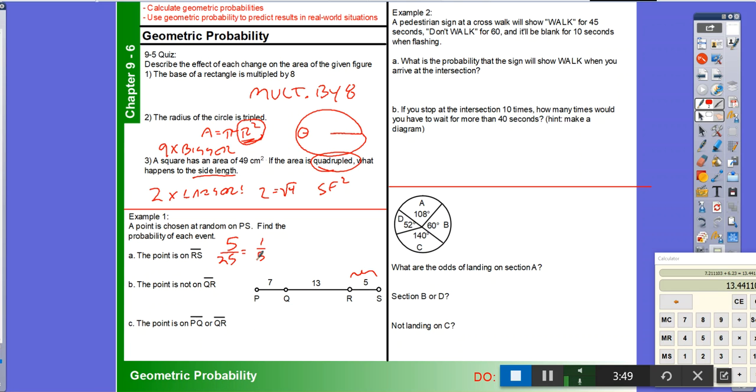What are the odds that the point is not on QR? If it's not on QR, that means it's either on RS or it's on PQ. And this is a distance of 5 plus 7, which is 12. The whole line segment hasn't changed. It's still 25 units long. So 12 out of 25 is 12/25. They don't share a factor.